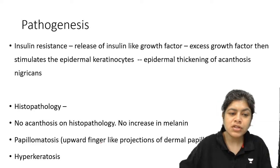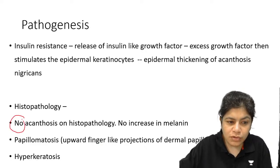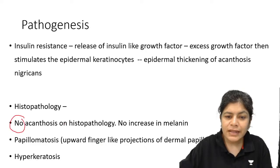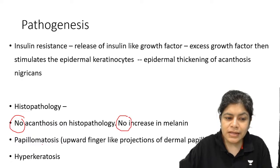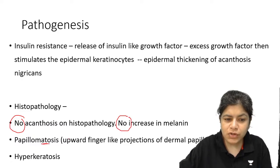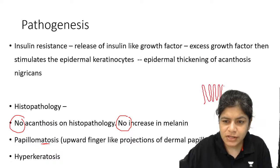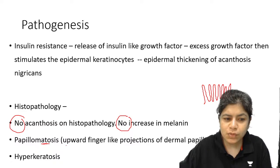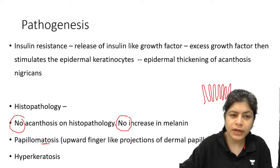Whenever there is insulin resistance, insulin-like growth factor is released. This stimulates epidermal keratinocytes, leading to epidermal thickening — that is, hyperkeratosis and papillomatosis of acanthosis nigricans. On histopathology, there is no acanthosis and no increase in melanin. It is caused by papillomatosis — upward finger-like projections of dermal papillae — and hyperkeratosis, which is thickening of the stratum corneum.